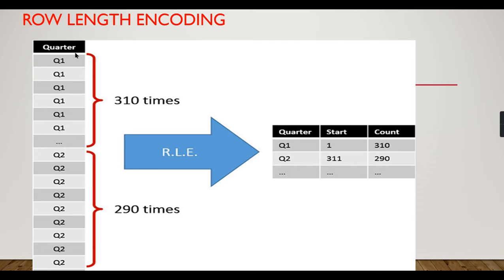Another technique is run-length encoding. If you have repeated values across rows — for example, rows 1 through 10 all have the value 'Q1' — it stores only that range and value once, instead of storing 'Q1' ten times. When retrieving data, the corresponding values are mapped back. This is how large datasets of 1 GB, 2 GB, or 50 GB can fit into RAM using encoding and compression techniques.